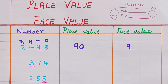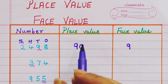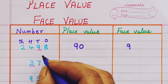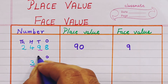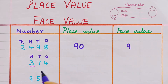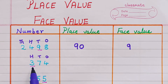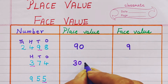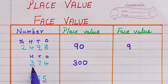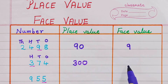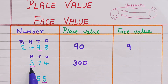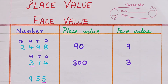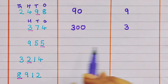Now let's see the next example: 374. Let's give the places — ones, tens, hundreds. 3 is present in the hundreds place, so the place value will become 300 because it is in the hundreds place. And the face value will be the number itself, so the face value is 3.